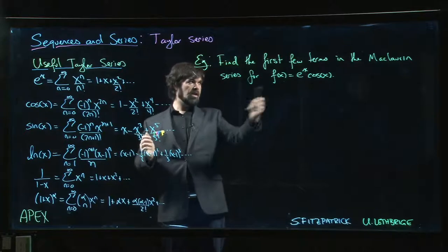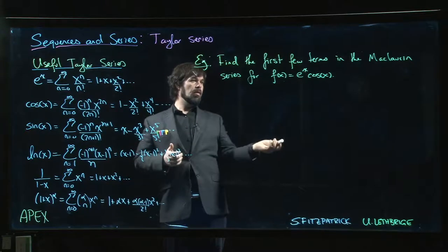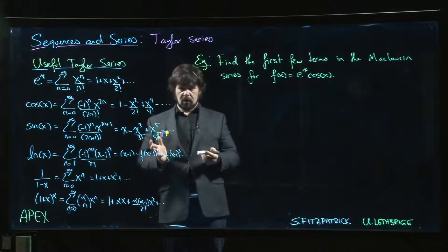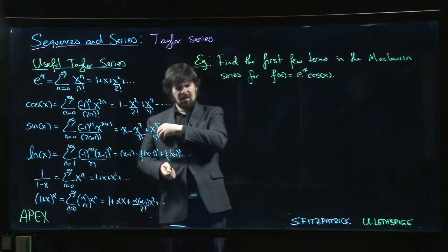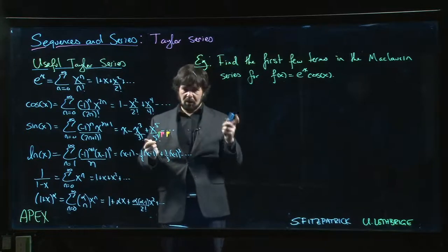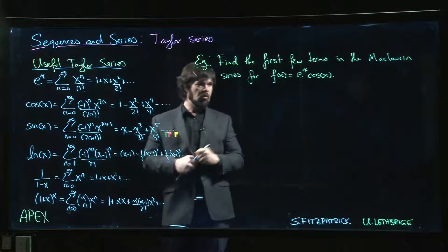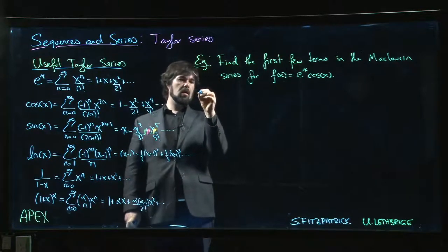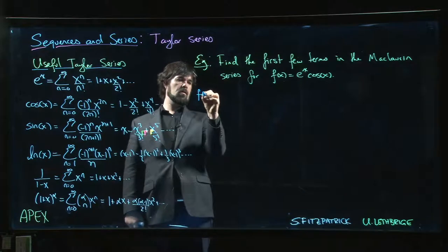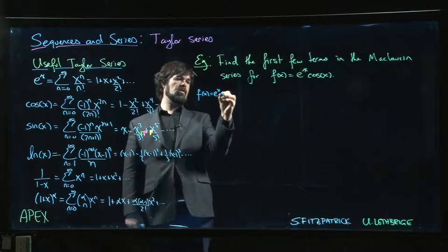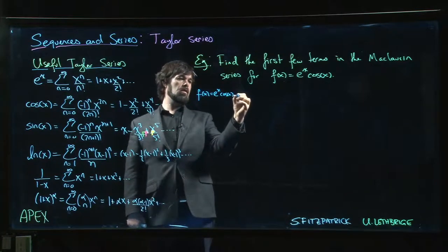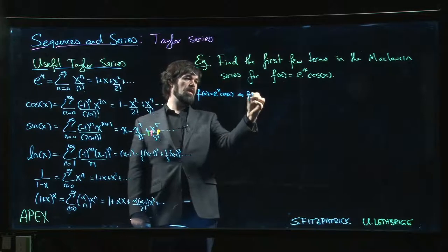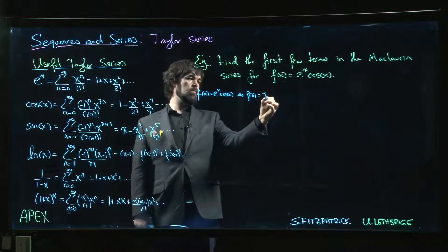So if you think about trying to get the first few terms in the Maclaurin series for this function, let's suppose for a second that we actually wanted to do this the long way. Imagine doing this the long way. What would you do? You'd say, okay, f of x is e to the x cos x, okay? So f of 0 is 1.